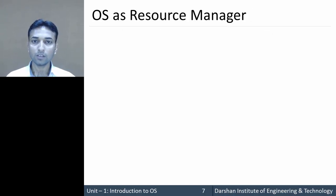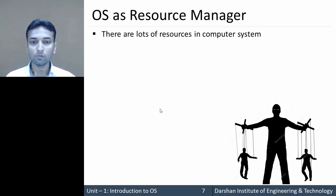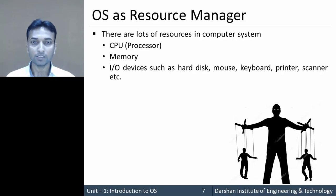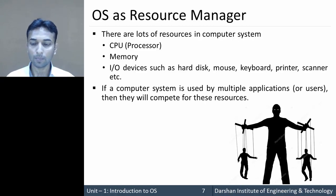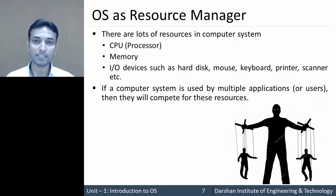Now, the second role is operating system as a resource manager. There are many resources in a computer such as CPU or processor, memory (RAM), and I/O devices such as hard disk, mouse, keyboard, printer, scanner, and many more. If a computer is used by more than one user, all users will compete for these resources, so the operating system controls access to all resources by all these users.